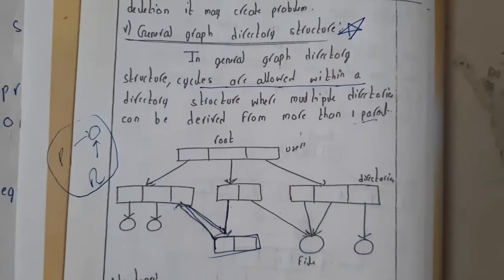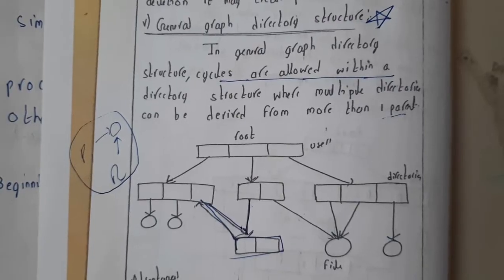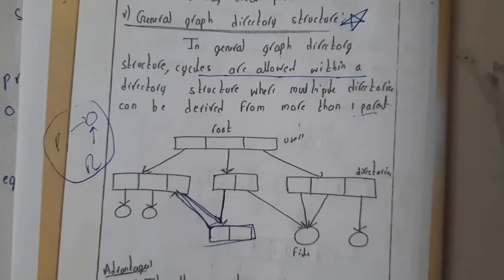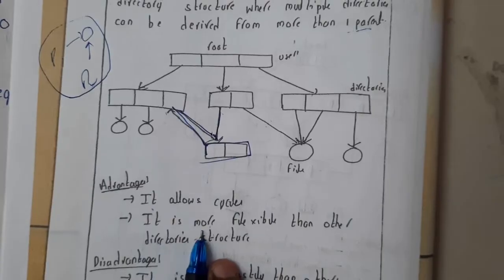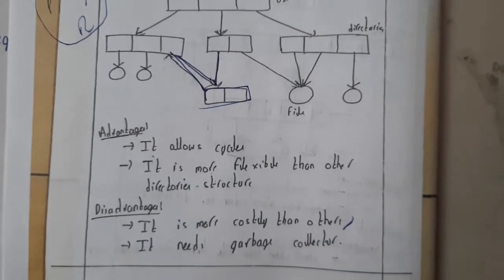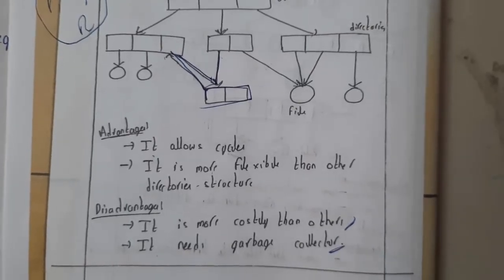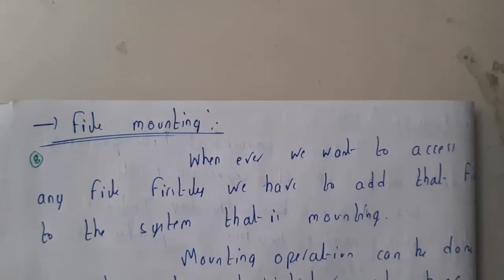This might be cost efficient, but the advantage will be we can do flexible ways in which we are searching, deletion, and everything. It allows cycles. We can allow cycles. It is more flexible than other directory structures. The main disadvantage: it is costlier than others and it needs a garbage collector separately. Now I hope everyone got at least a small idea on all these directory structures. In the next tutorial, we'll be going through file mounting. Thank you. Thanks for watching.